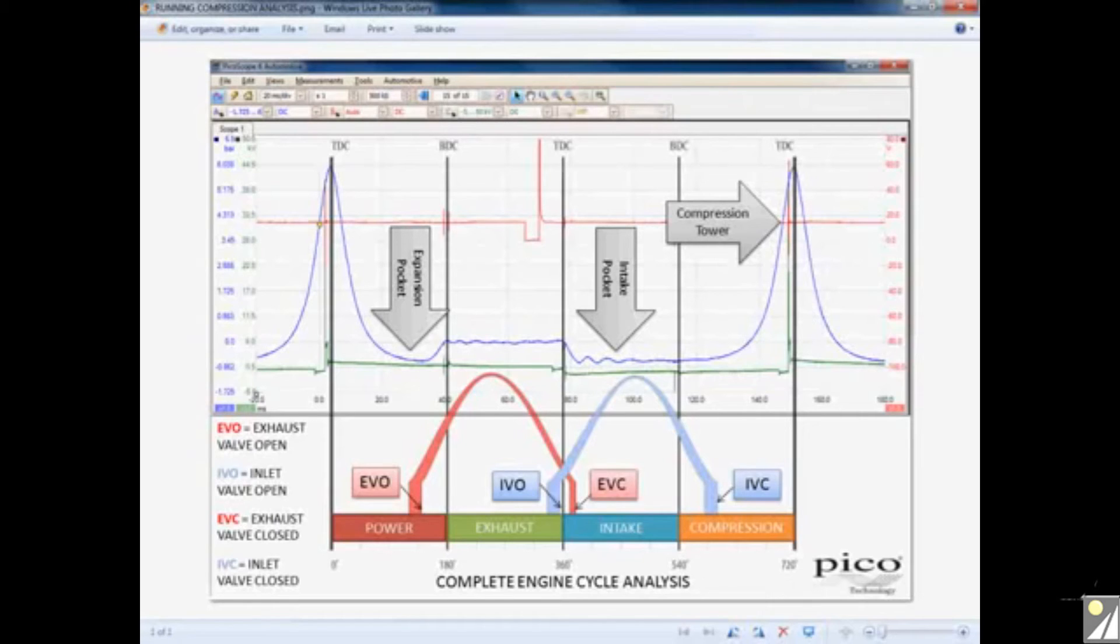This then takes us into the compression phase in which the piston is now at bottom dead center and it's going to travel all the way up to top dead center. We can see that our intake valve is closing and then after this we can see that our pressure begins to build back up and this is because the piston now is compressing the air in the cylinder as it rises back up to top dead center. Then essentially the cycle repeats itself and this is how to interpret a running compression waveform.